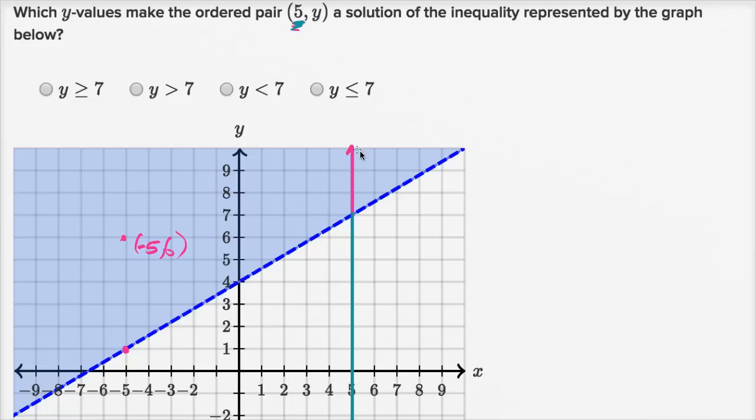And actually, I could keep going if I want to. So y is going to have to be greater than, it can't be greater than or equal to 7, it has to be greater than 7. If it was greater than or equal to 7, we'd be including the point on the line, but I already talked about this being a dashed line, so we don't want to include the points on the line, we only want to include the points above the line.